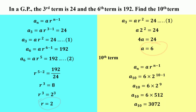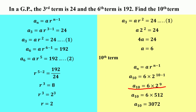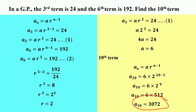Since we have the first term A equals 6 and the common ratio R equals 2, we can find the 10th term. The 10th term equals AR^(n-1), which is 6 times 2^(10-1), equals 6 times 2⁹. Since 2⁹ equals 512, we get 6 times 512, which equals 3072. So the 10th term of this geometric progression is 3072.